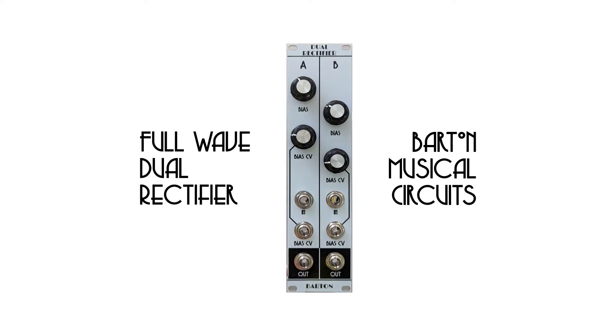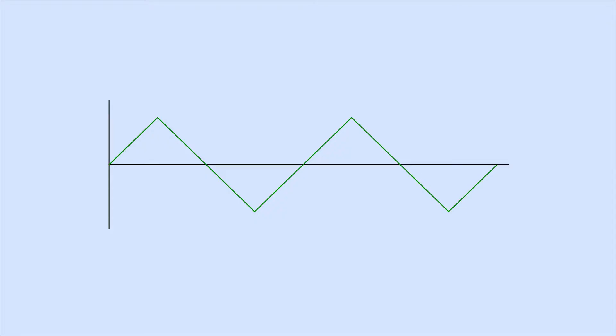It's got two full-wave rectifiers inside it, each with a voltage controllable offset or bias as it says on the front. So what does that do to a signal? You put in some sort of waveform such as a triangle wave here. And what happens with a full-wave rectifier is it leaves the positive voltage side alone and negative voltages get flipped around to positive voltages.